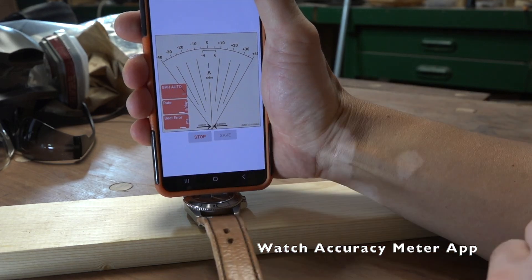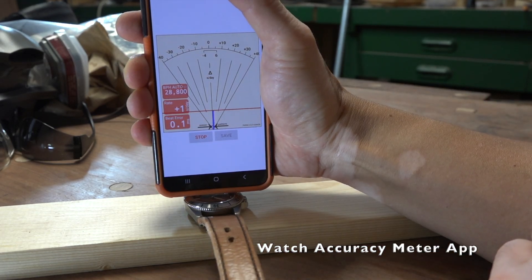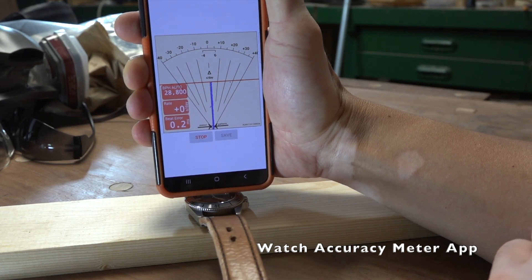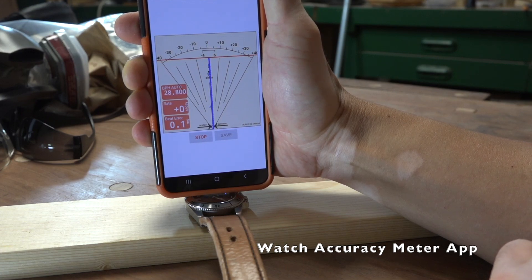When I first finished this watch, it was plus or minus two to three seconds a day. I adjusted the hairspring and got it down to plus or minus one second a day. If you want to learn how to do that, go ahead and follow the link in the description.